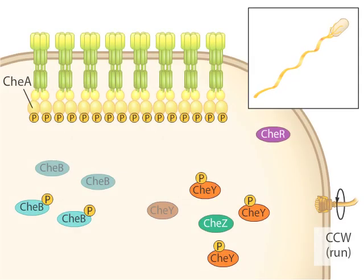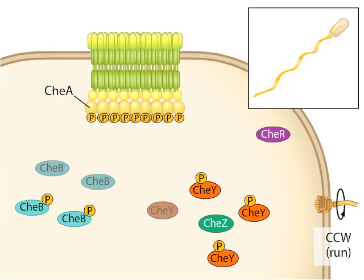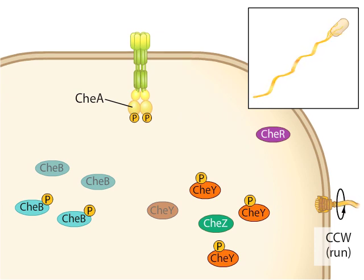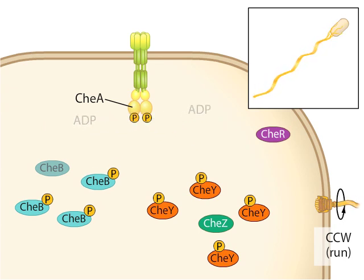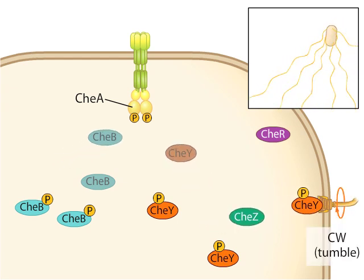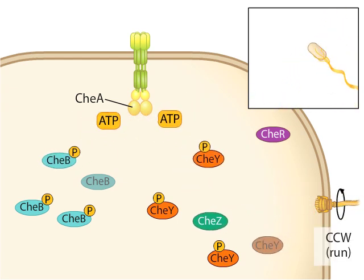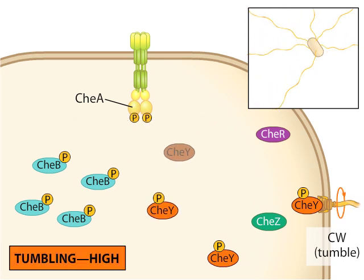Let's look at the process again, this time considering a phenomenon called adaptation, which involves the proteins CheB and CheR. Because the MCPs act more or less in unison, for simplicity, we will show just one MCP here. When no attractant is present, CheA is active and phosphorylated. CheA phosphorylates both CheY and CheB. The CheY and CheB proteins undergo continual turnover, losing their phosphates spontaneously or, in the case of CheY, by the action of CheZ. CheY and CheB are phosphorylated by CheA as part of a continual cycle. A high level of phosphorylated CheY results in a high frequency of tumbling.